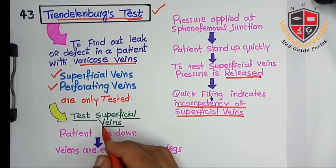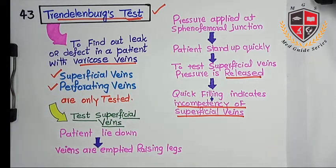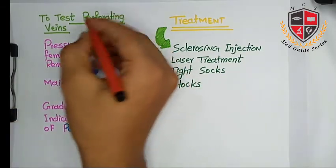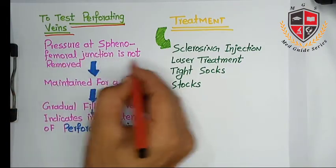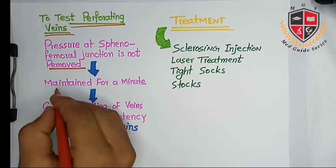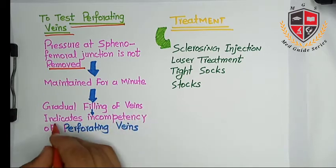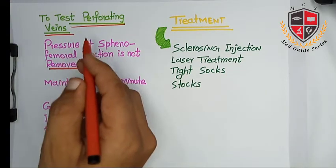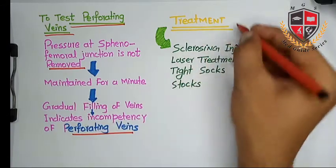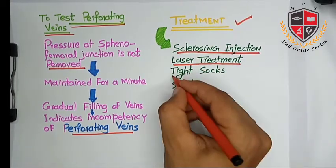To test superficial veins, pressure is released from the saphenofemoral junction, and quick filling of veins indicates incompetency of superficial veins. To test the perforating veins, the pressure at the saphenofemoral junction is not released but maintained for a minute, and gradual filling of veins indicates incompetency of the perforating veins.